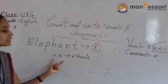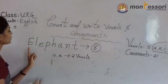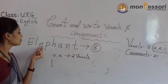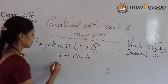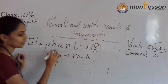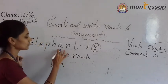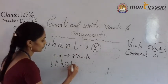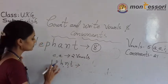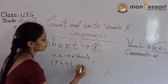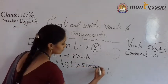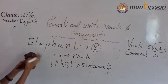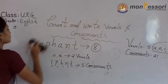Now the consonant letters: L. E — already counted as vowel. Next: L. E — already counted as vowel. P. H. A — already vowel. Next: N. Next: T. So how many consonants are there? 1, 2, 3, 4, 5 — five consonants.